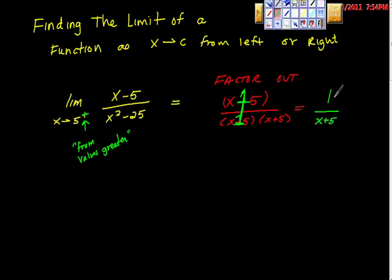So if we approach from values greater than, and that's what this symbol right here means, from values greater but arbitrarily close, we're going to keep getting closer and closer to that number that we want. We want 5, but we're coming from that side. So look what would happen here. We'd get 1 over, so we're going to let x equal 5 here, and we get equals 1 tenth.